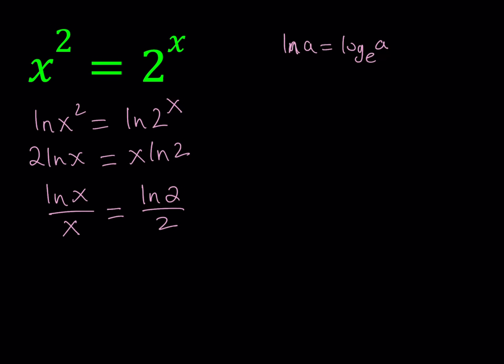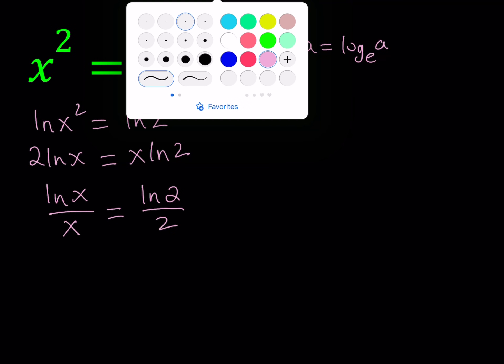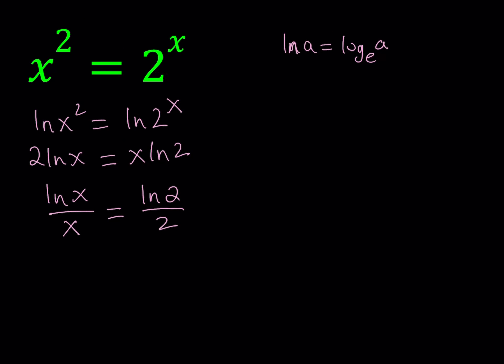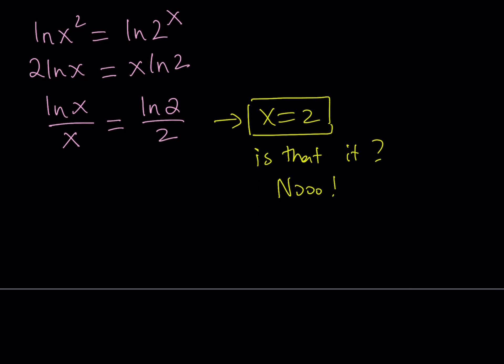It's not really like guess and check because it's kind of obvious that x equals 2 is going to work, right? I hope so. So x equals 2 is a valid solution, but the million dollar question is, is that the only solution? Is that it? And the answer is no. That's not the only solution. And why? You probably already guessed, but let me tell you something interesting.